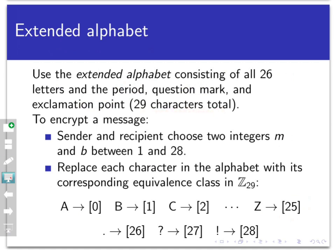Here's how I will encrypt a message. If I want to send a message under this system, both myself and the person I'm sending it to have to decide on two integers — one called M and the other called B — and they need to be between 1 and 28 inclusively. I'm going to go through each character one by one and replace each character with the equivalence class in its corresponding position in Z29. So A is replaced by the class of 0, B by the class of 1, C by the class of 2, and so on, all the way through Z, which gets the class of 25. Then the period gets the class of 26, the question mark the class of 27, and the exclamation point the class of 28.